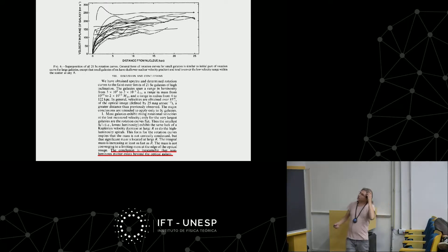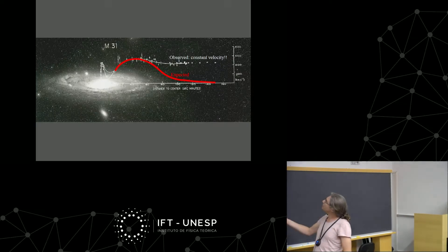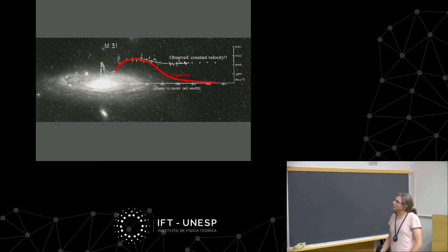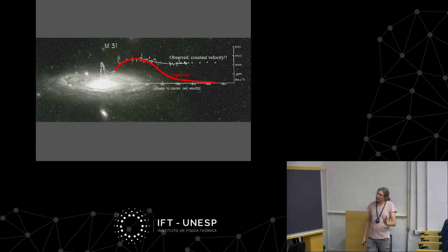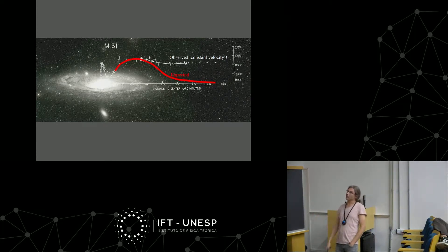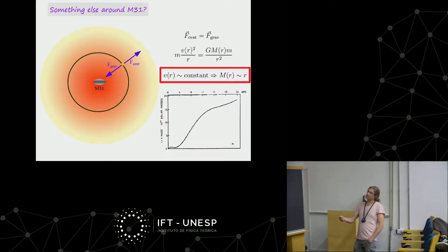To explain these observations, it is necessary to introduce approximately 80–85% of the mass of the galaxy in the form of dark matter — roughly the same ratio between visible and dark matter as found in galaxy clusters.